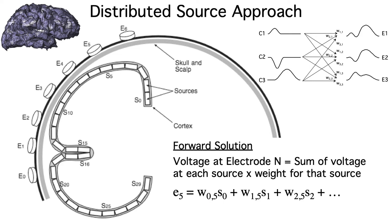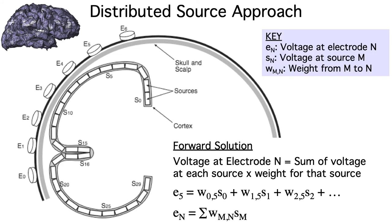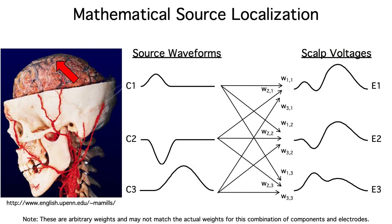This would be a very long equation, and we can express it more compactly using a summation symbol. This equation now represents every electrode N, every source S, and the matrix of weights between each source and each electrode, W. Remember that the weights are just constants, and we can estimate them from a structural MRI scan.